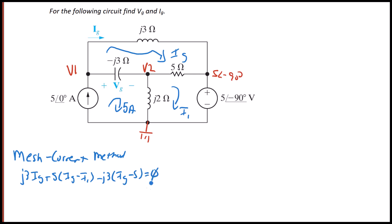Then if we do KVL at I1, you're going to have J2 times I1 minus five plus five times I1 minus IG plus five angle negative 90 degrees, and that equals zero.